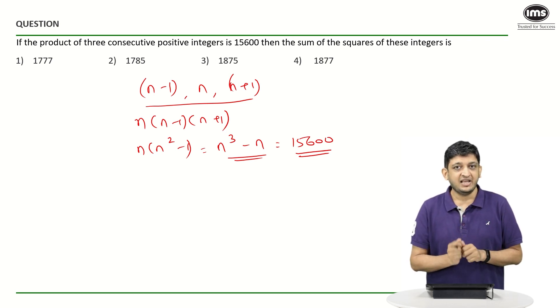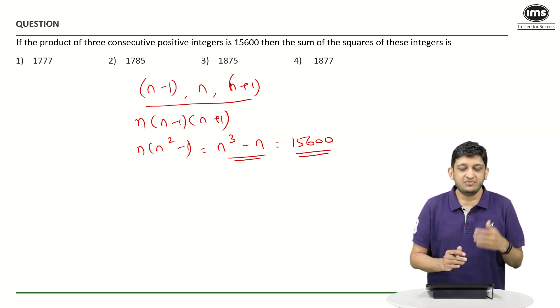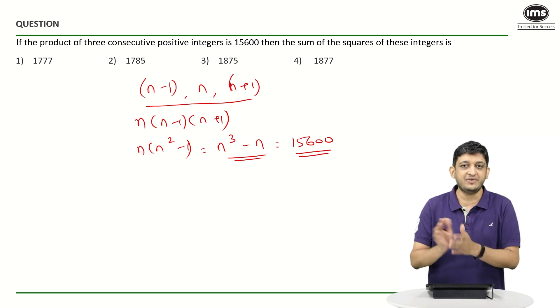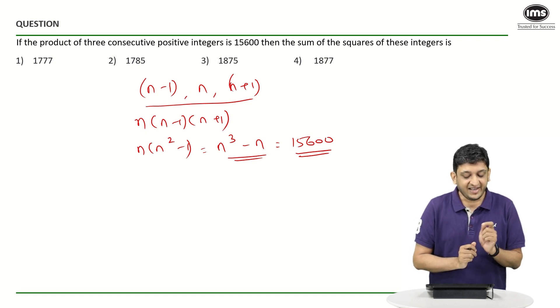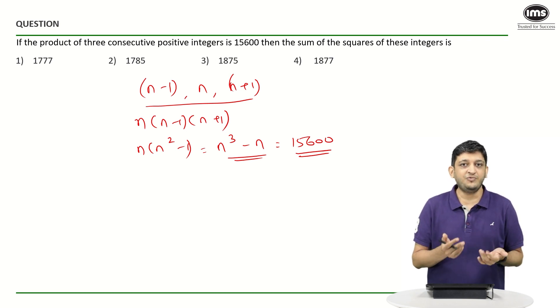Now I need something in the form of n³-n, and this is where your instincts will take over. A lot of people who are extremely good candidates will immediately figure out that n has to be 25. How do these people figure it out? That is basically what I am going to explain next.